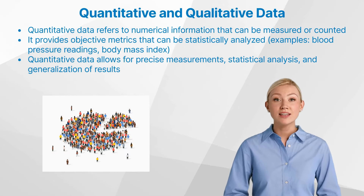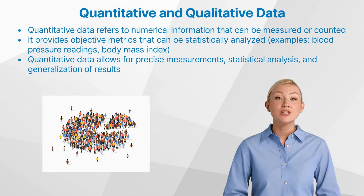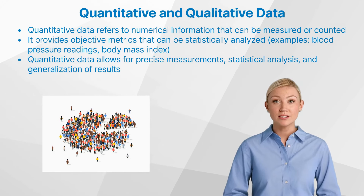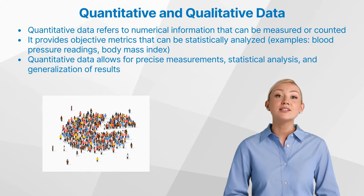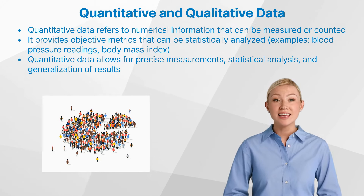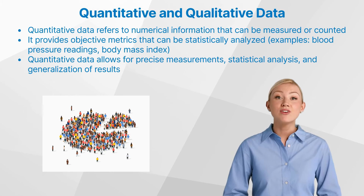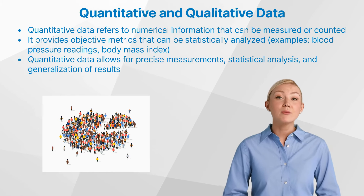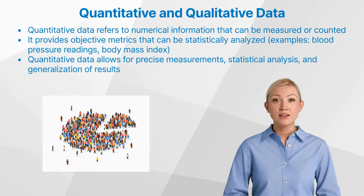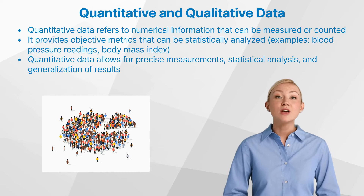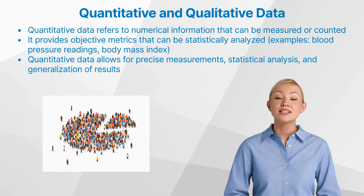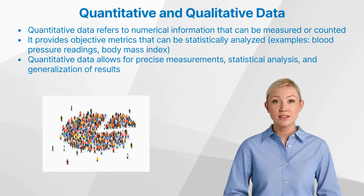Quantitative data refers to numerical information that can be measured or counted. It provides objective metrics that can be statistically analyzed. In clinical trials, examples of quantitative data include blood pressure readings, body mass index, and the number of participants experiencing a particular side effect.